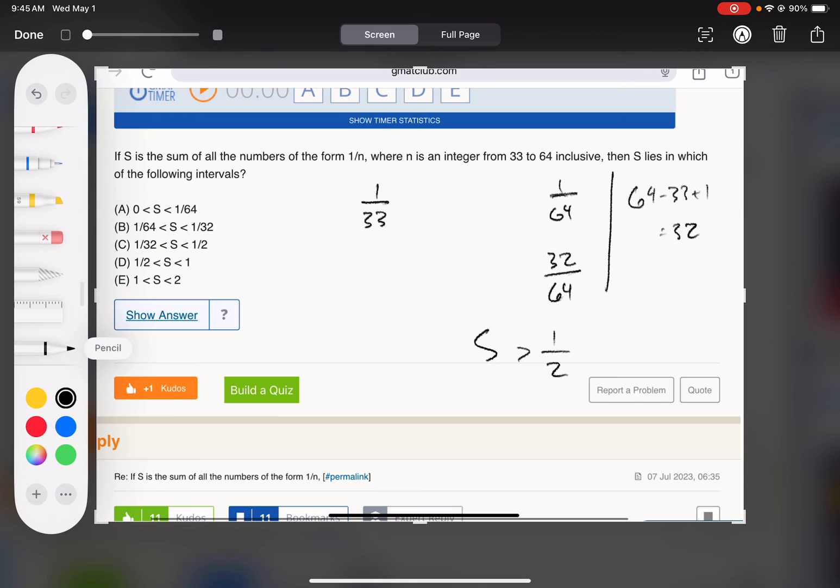And then we do that on the other end. We say, what if they were all 1 over 33? They would sum to 32 over 33, which is still less than, you know, a little bit less than 1.